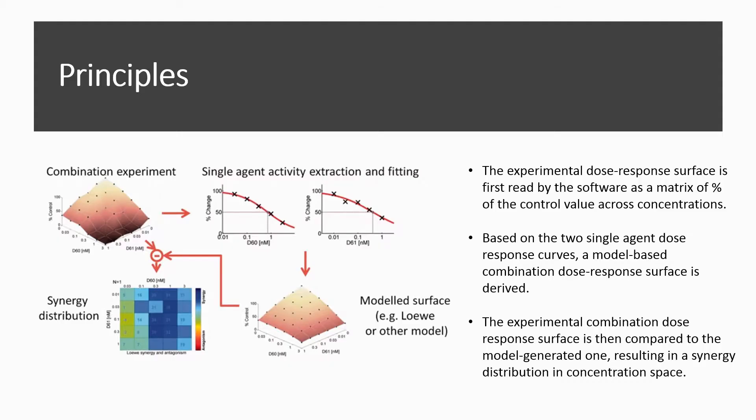ComBenefit implements a surface approach where in vitro experimental data is compared to mathematical models of dose-response for non-synergistic combinations. The three classical models, namely the LOW, the BLIS, and the Highest Single Agent, or HSA models, have been incorporated in the platform. These models have been used extensively in the literature.